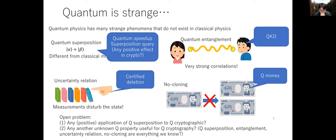Quantum strange phenomena have been applied to cryptography in these ways. One open problem is whether there is any positive application of quantum superposition. Another open problem is whether there are any other unknown quantum phenomena useful for cryptography, beyond superposition, entanglement, uncertainty relations, and no-cloning.